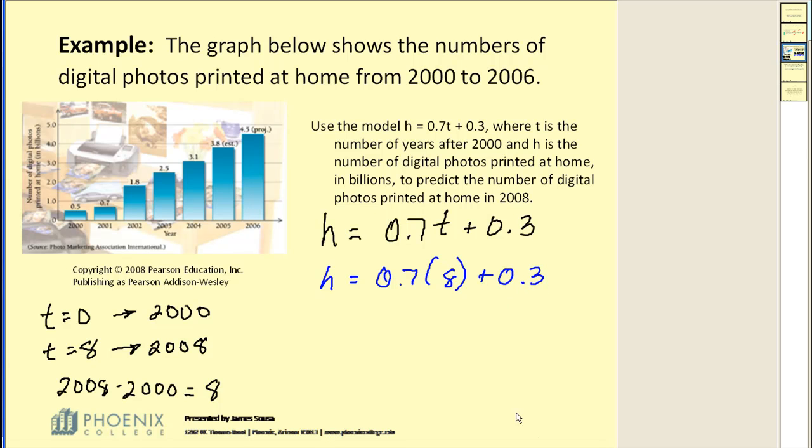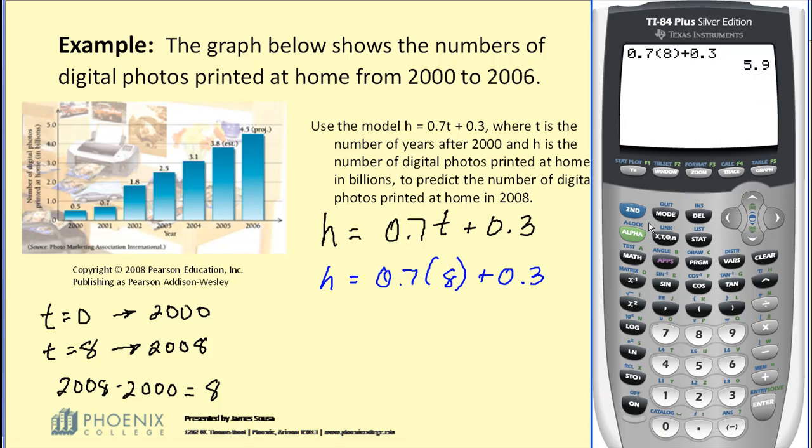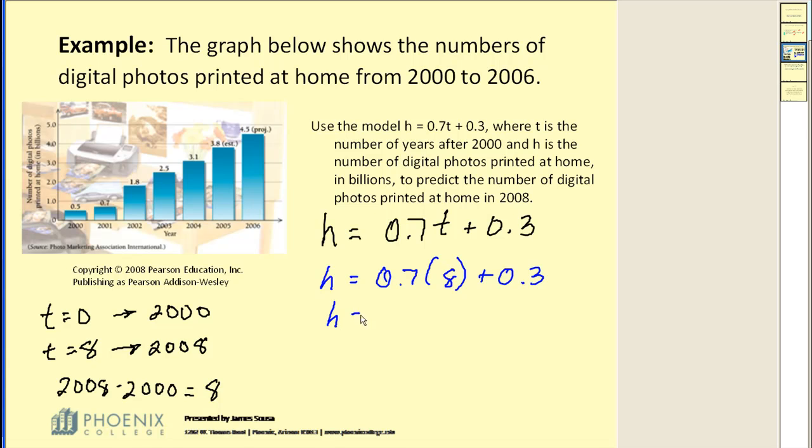Okay, let's go ahead and evaluate this on our graphing calculators. So I have 0.7 times 8 plus 0.3, and we get 5.9. H is equal to 5.9.